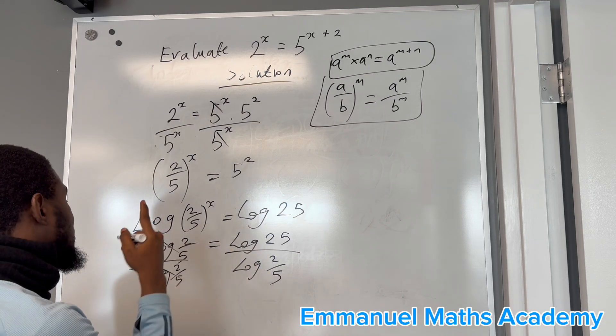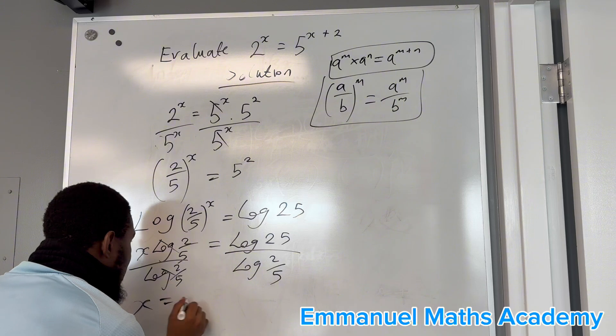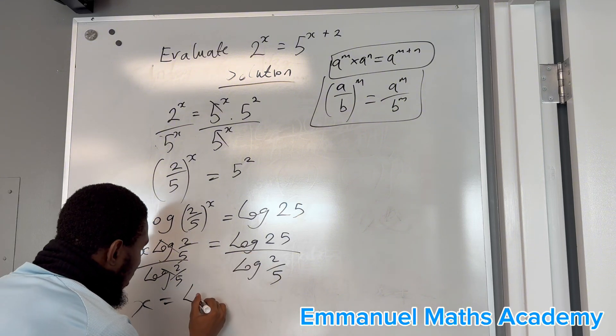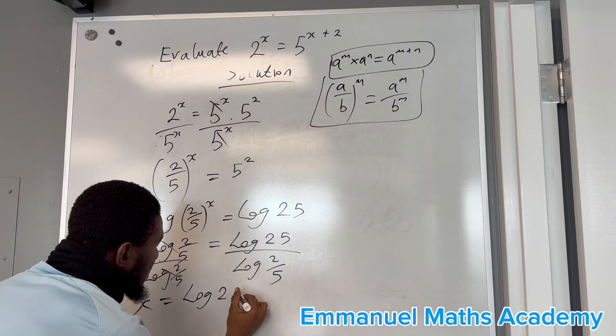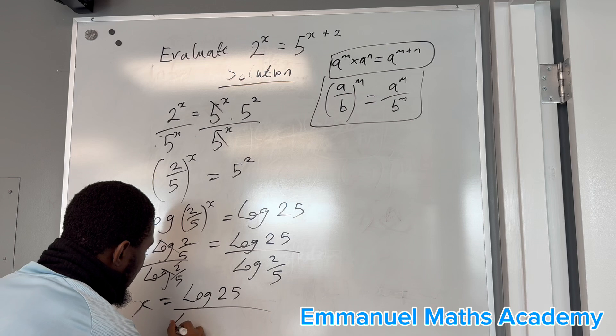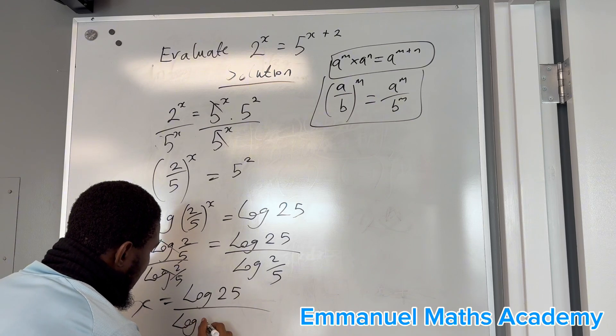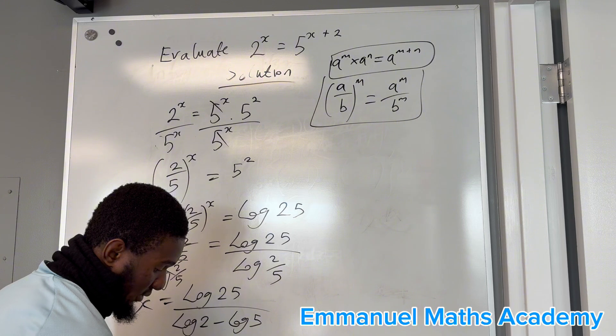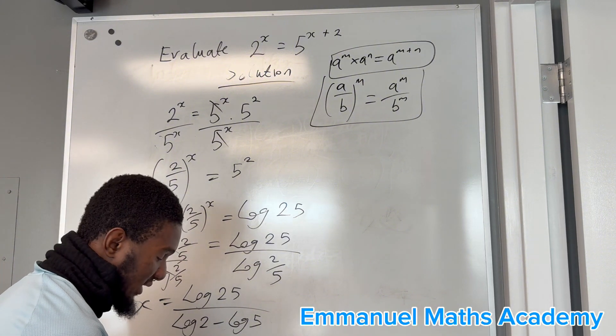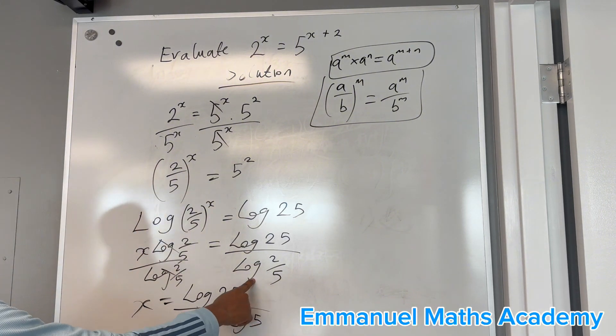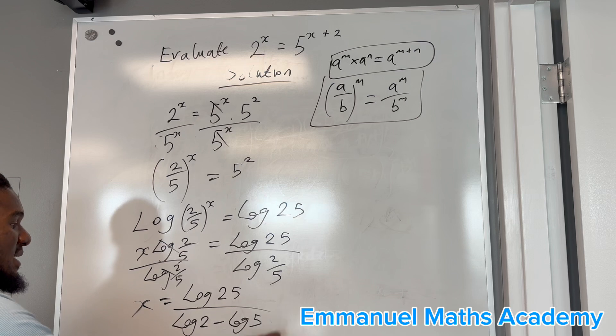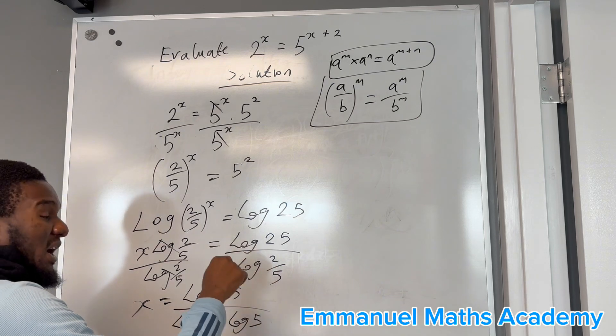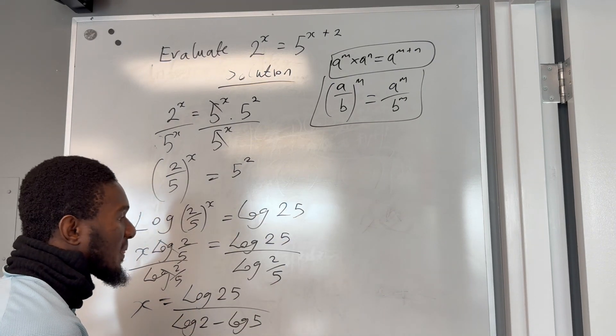Or you can simplify further: x equals log 25 over log 2 minus log 5. From the basic law of logarithms, log of a over b equals log a minus log b. As simple as that.